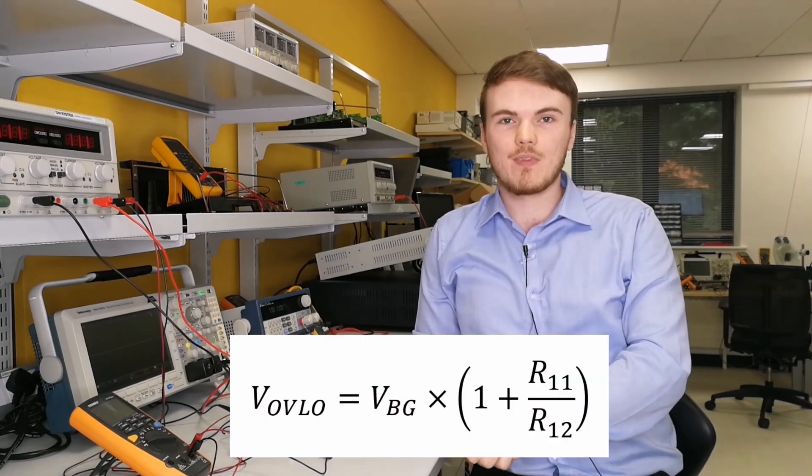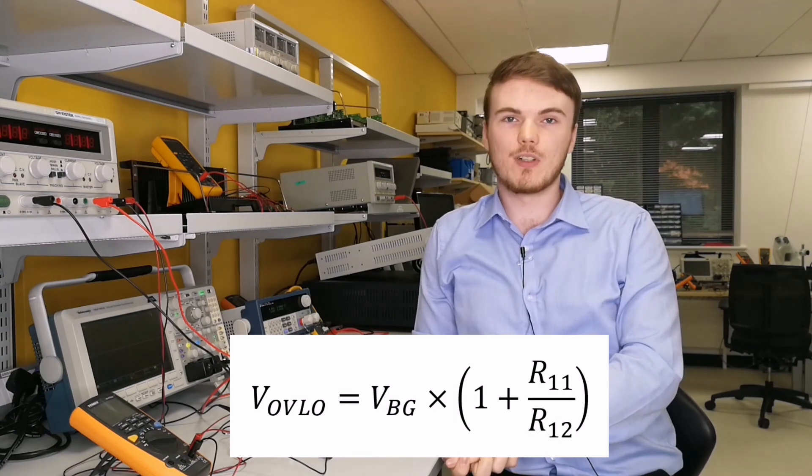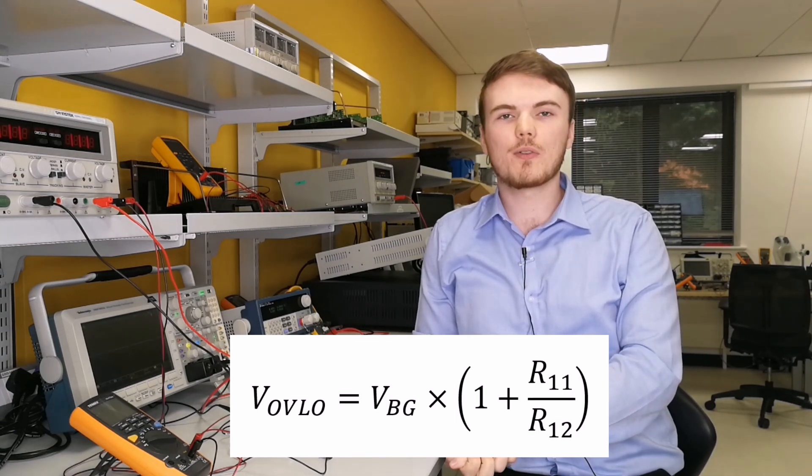Now that you're familiar with the EV-kit layout I will now demonstrate how to set a custom OV-LO threshold. The OV-LO threshold is determined from the datasheet by resistors OR11 and OR12.